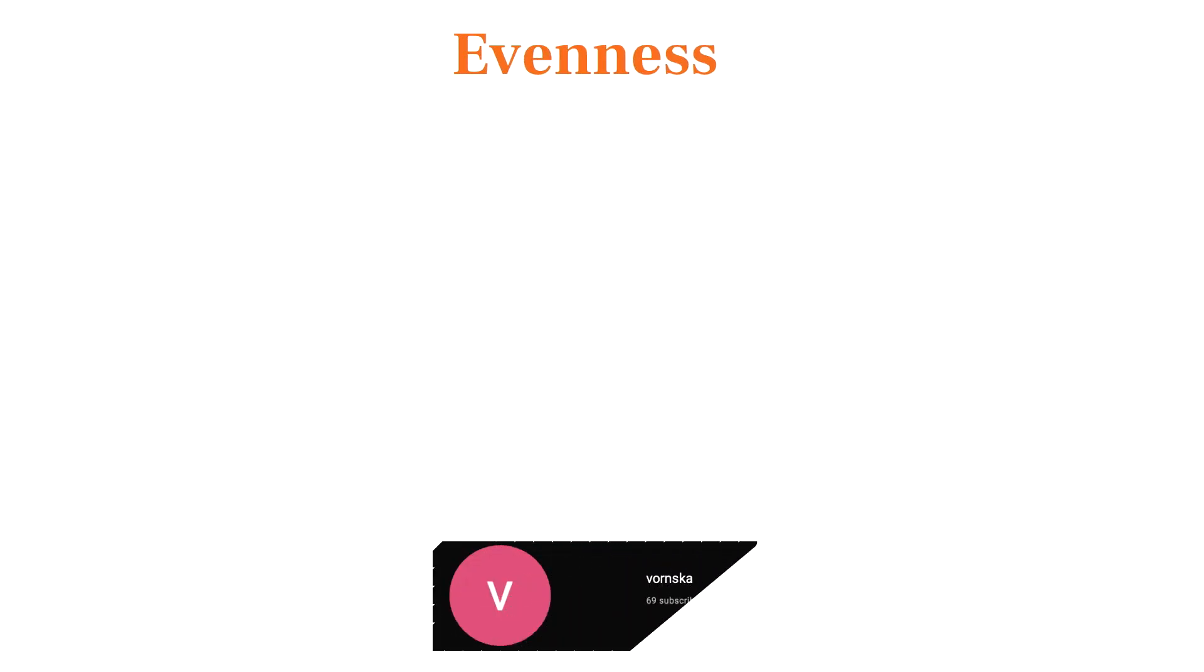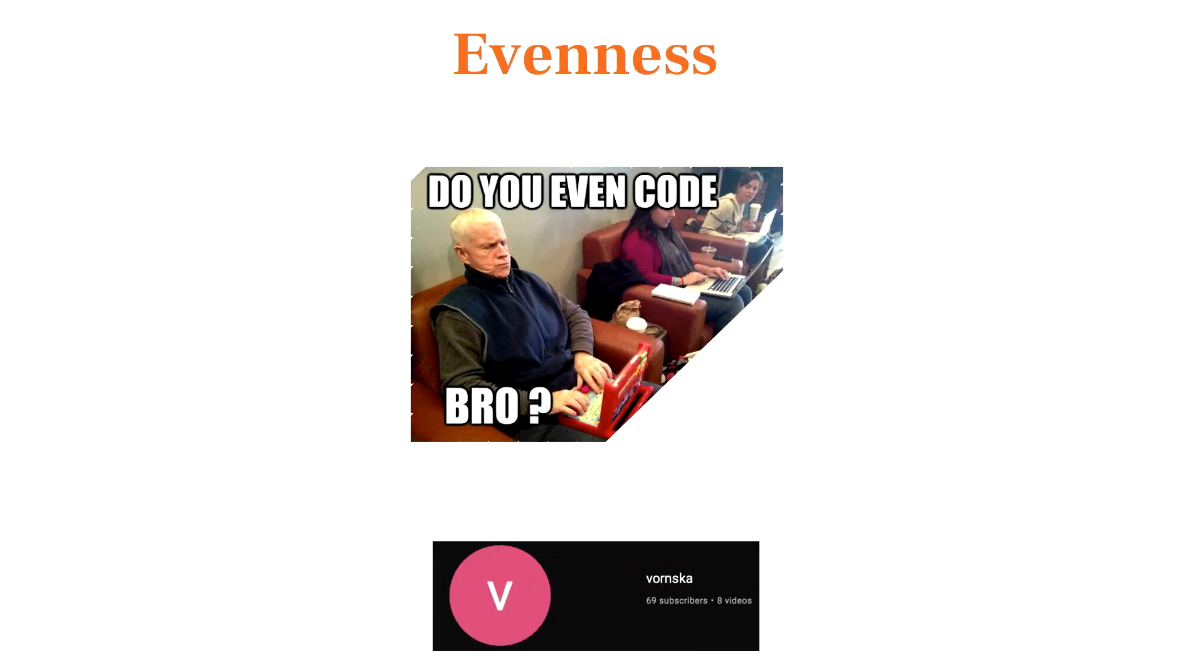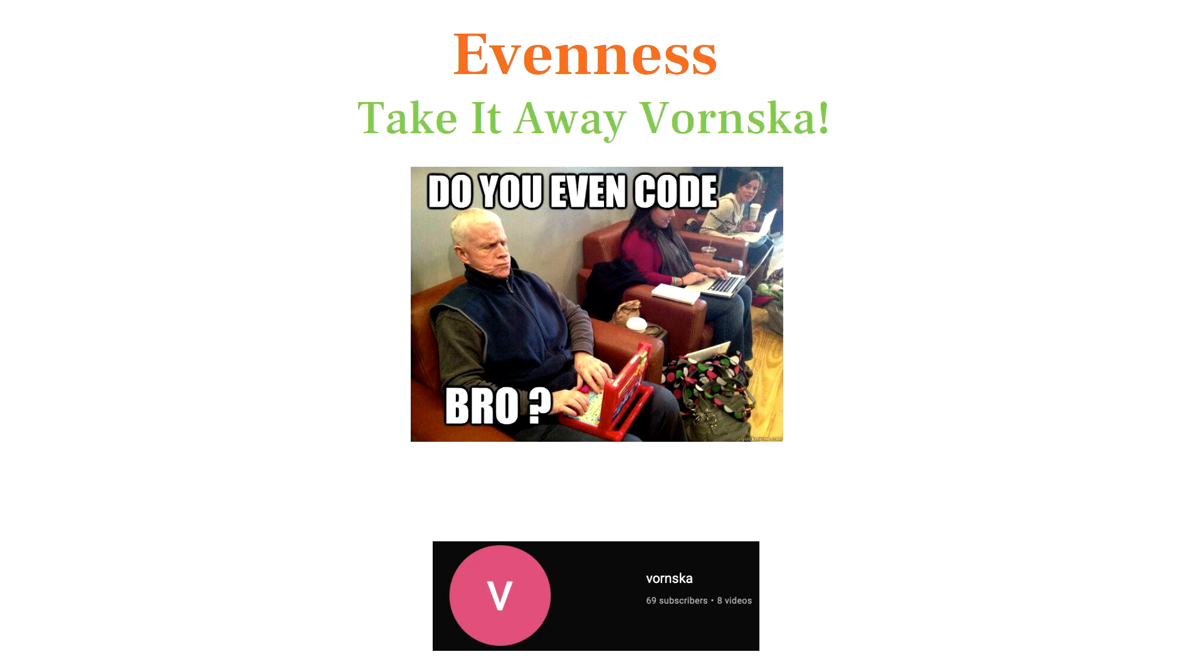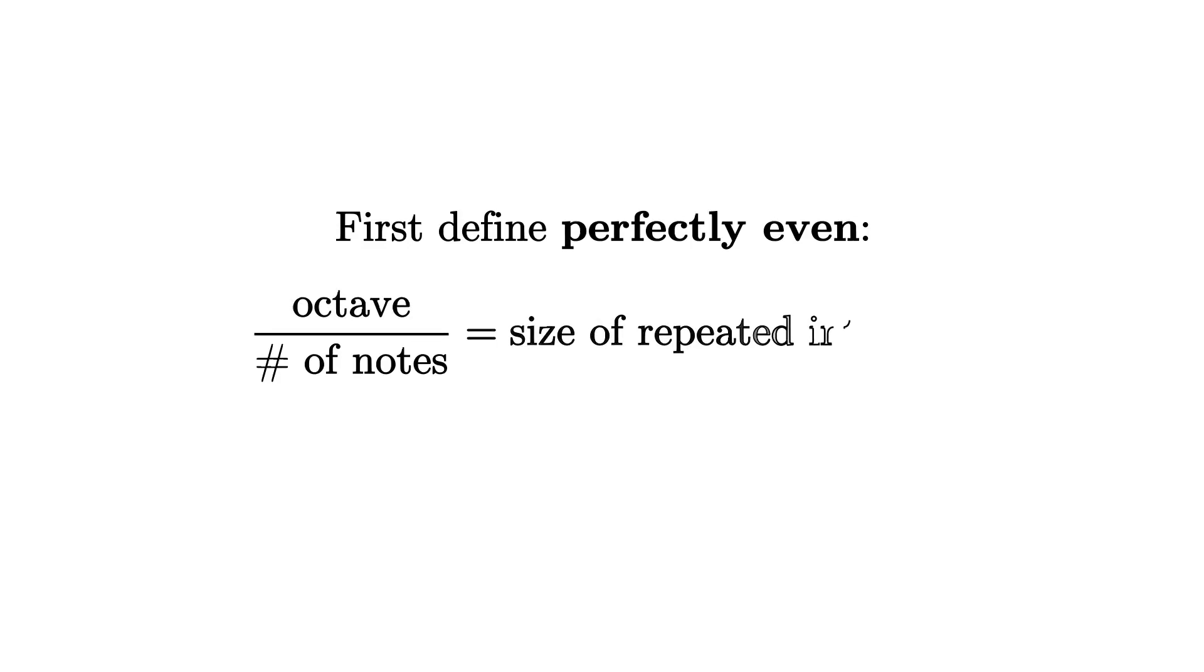Since Fornska is the one that coded the algorithm that rank orders the sets according to evenness in our chart, I'm going to turn it over to him to explain evenness. We start by defining a perfectly even set. If you want a chord with a certain number of notes, simply divide the octave into that many equal-sized intervals.